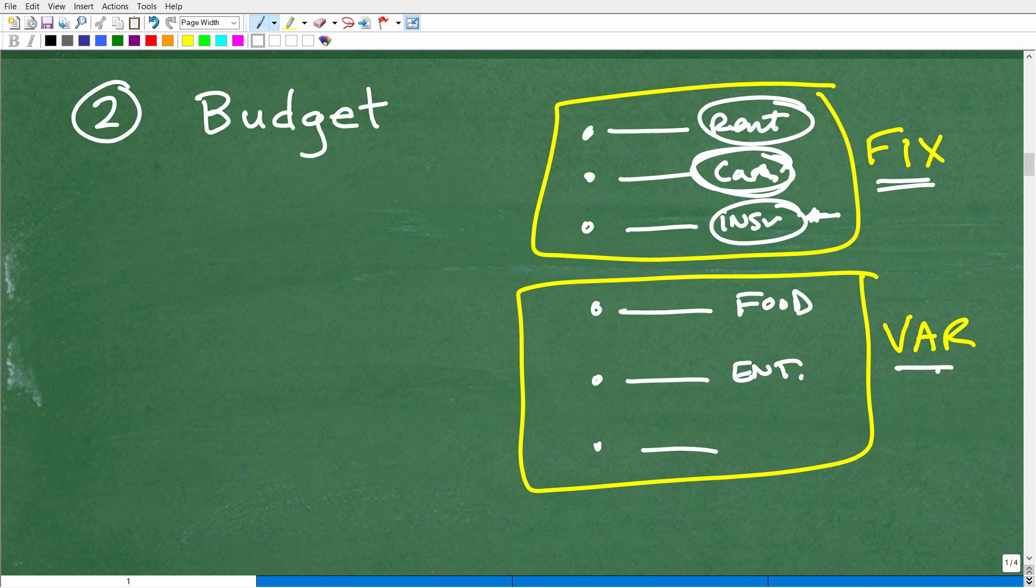Some of your fixed categories, like your car insurance, you could go shopping around to reduce that. But like your car payment, you're not going to refinance your car right now because interest rates are going up. So refinancing your car or any big loan, especially like a house, you're going to end up paying more. So that's definitely not a way that you could save money. But anyways, you have your fixed and then you have your variable. How much you spend on food. Certainly food is going up, but it is variable. What can you do to try to save money on food? Certainly your entertainment, going out to eat, things like that. These are things that you can control.